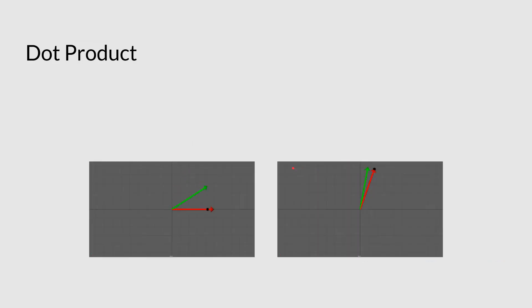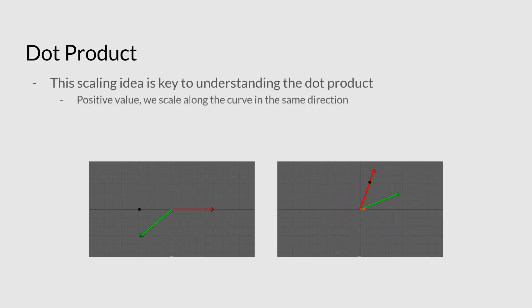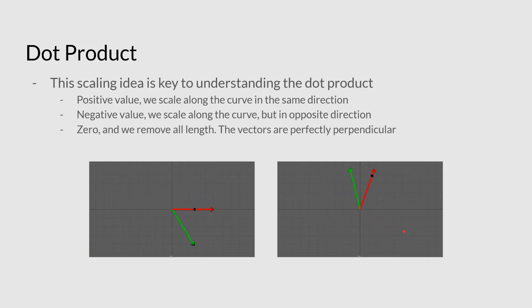Now, I think this scaling understanding is really key to understanding the dot product, right? Because if you think that to be able to match these ideas, if you scale positively, they're going in the same direction. But if it's a negative value, we need to scale backwards on the curve. Positive, we scale along the curve. Negative, we scale backwards. And if it's zero, we just remove all length, then they're perfectly perpendicular, like the shadow is falling straight down, the shadow doesn't have any length. This is a bit of a tricky one, but I hope some of this kind of made sense.